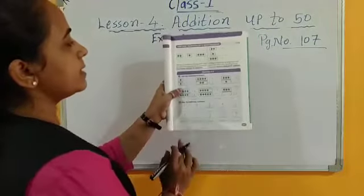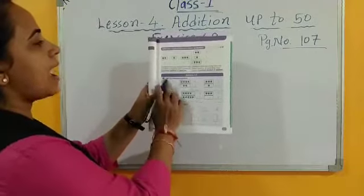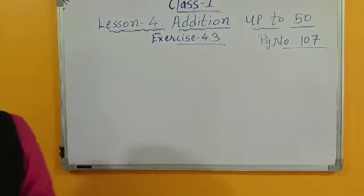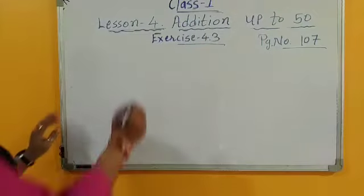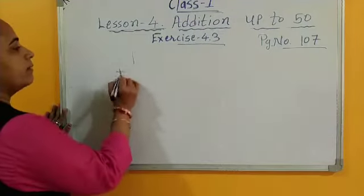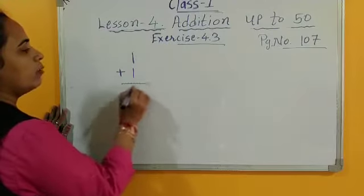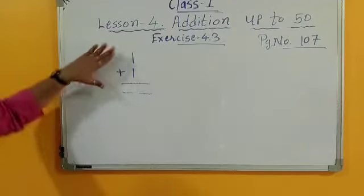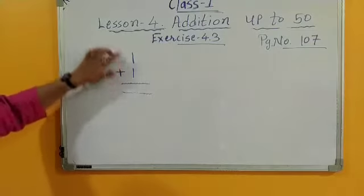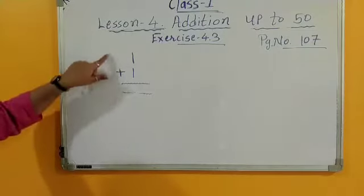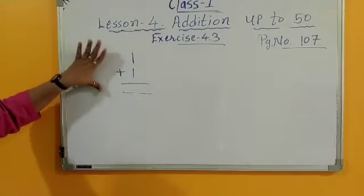This 4.3 exercise is add the following numbers, means vertical addition. What is this? Vertical addition. For example, this method is vertical addition, means 1 plus 1. This is called vertical addition.